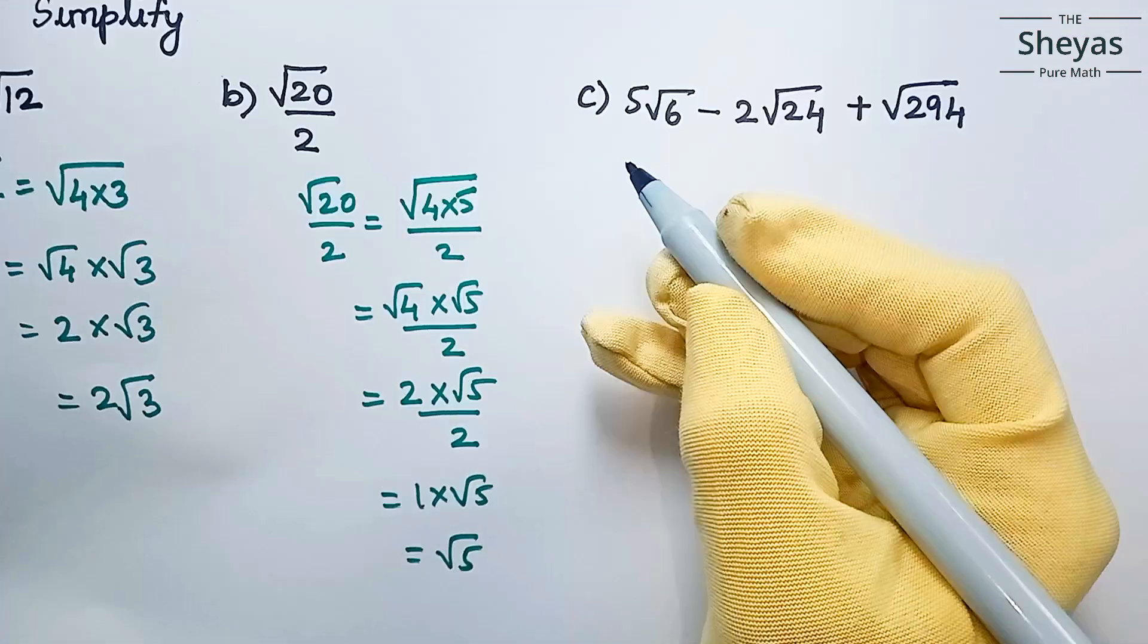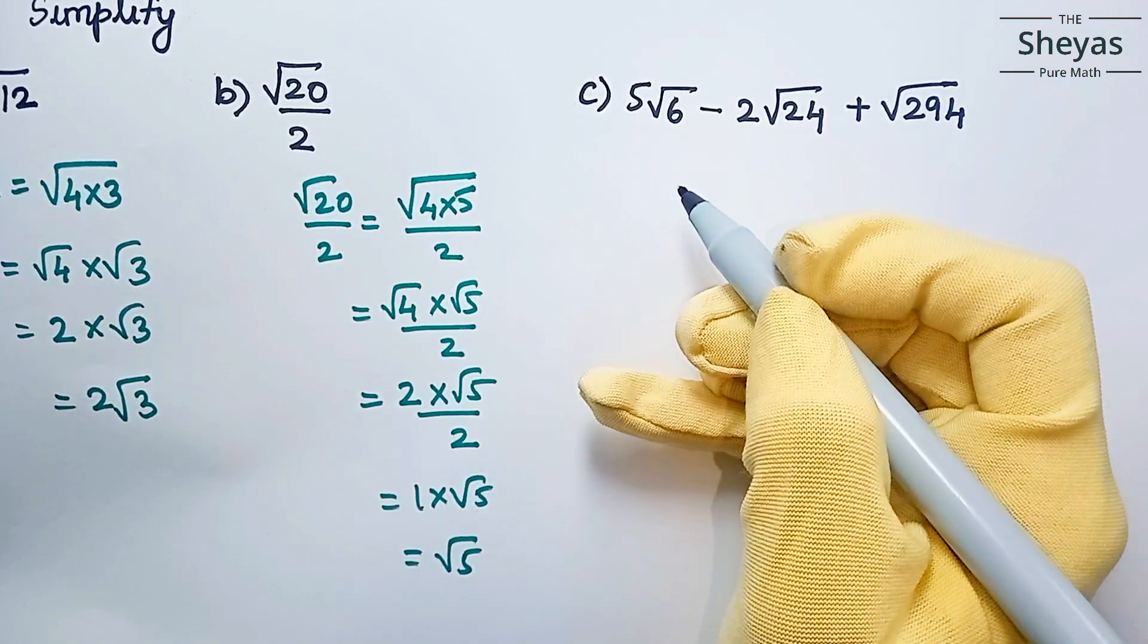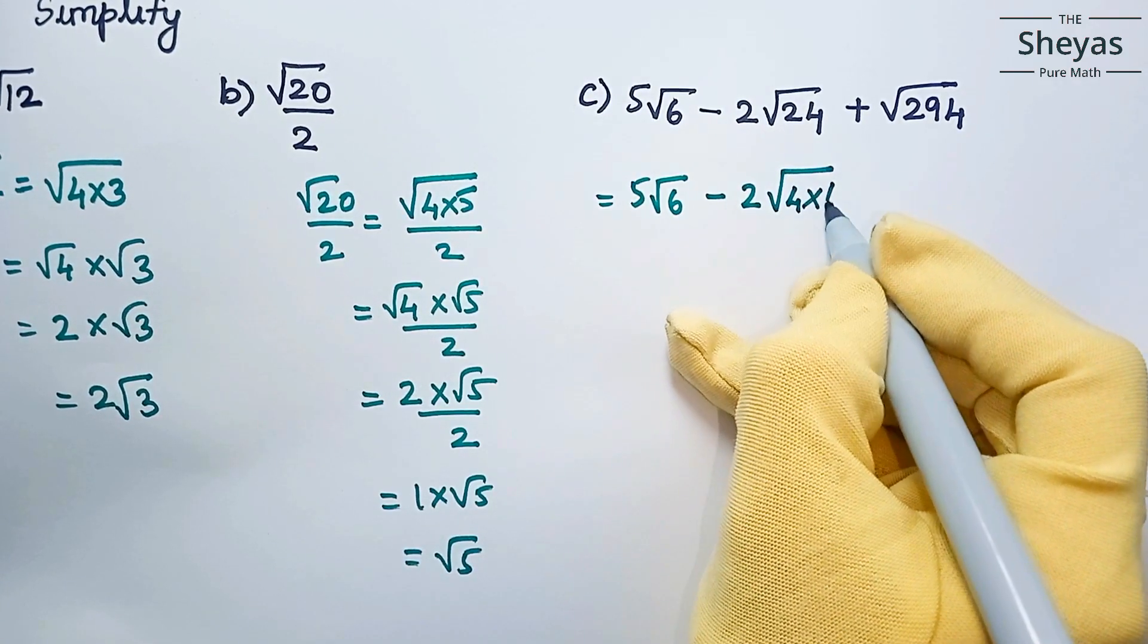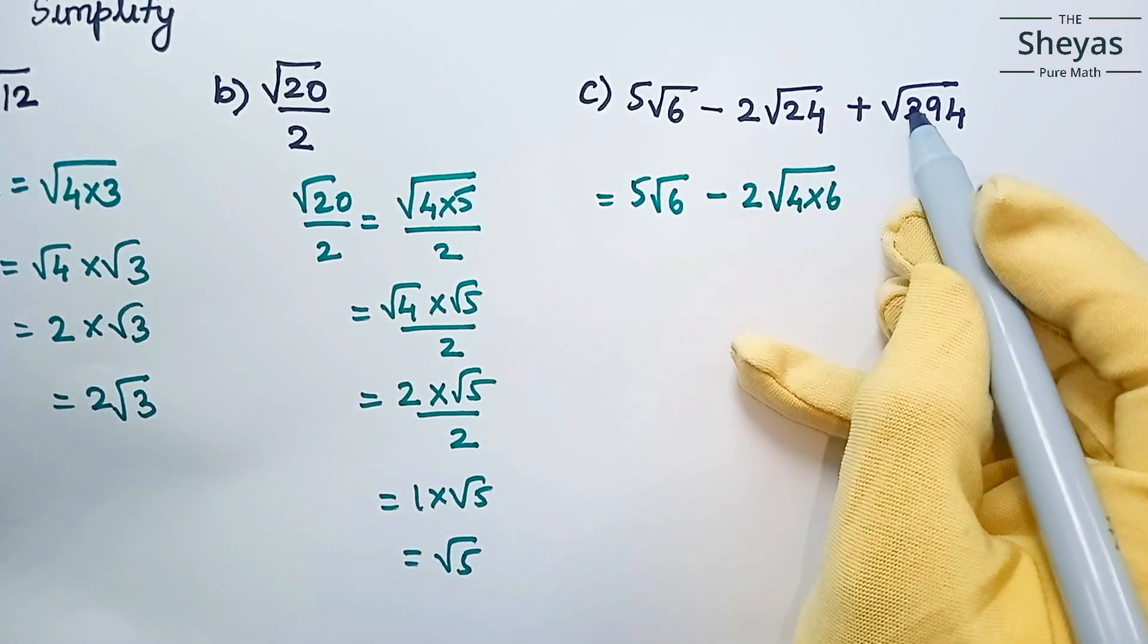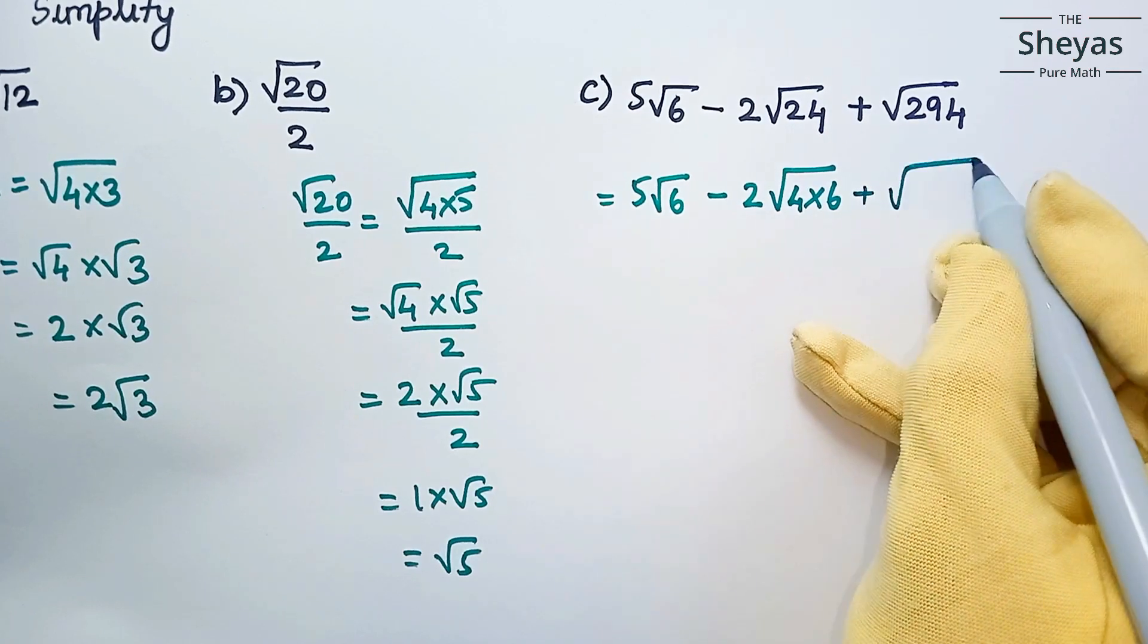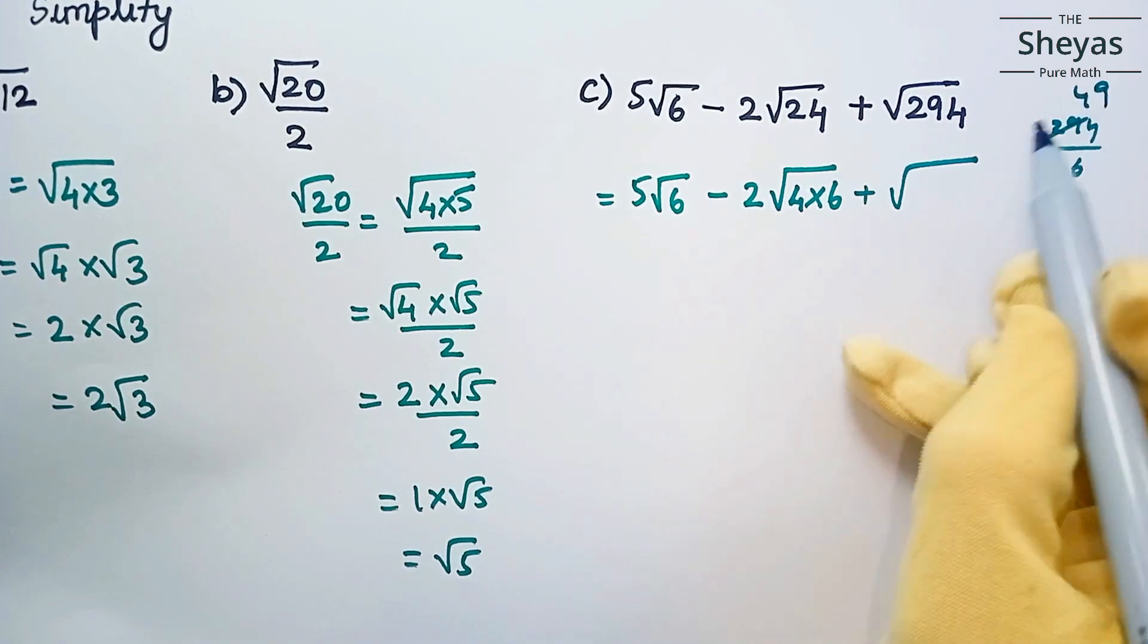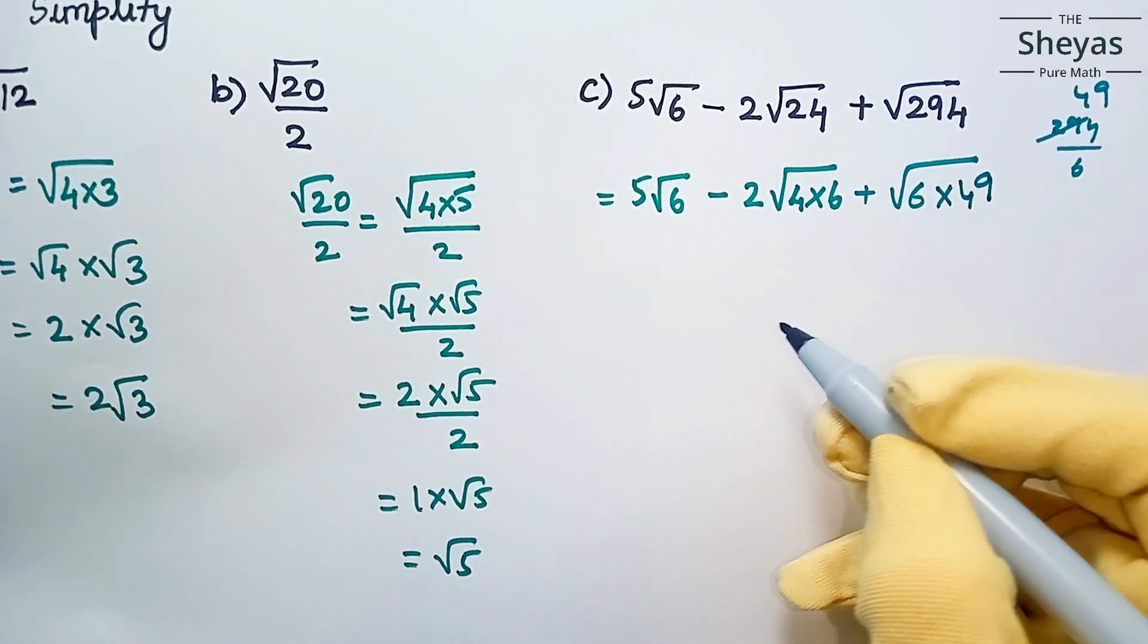Let us do the third problem. Simplify 5 root 6 minus 2 root 24 plus root 294. I write 5 root 6 as such, minus 2 times 24, which I'm going to write as 4 times 6. For the third term, divide 294 by 6 and you will get 49, so I can write 294 as 6 times root 49.